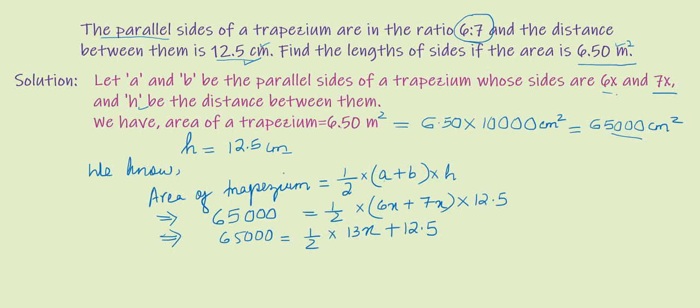Next step, we'll cross multiply. 65,000 times 2 equals 13 multiplied by 12.5 times x. To make the calculation easier, we can simplify 12.5.